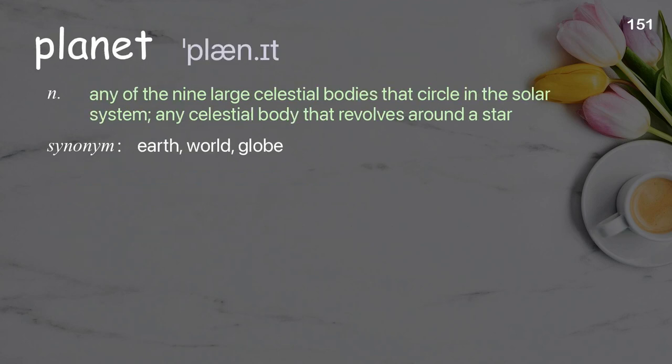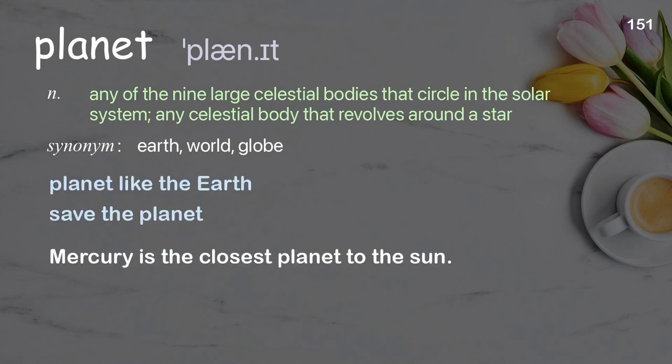Planet: Any of the nine large celestial bodies that circle in the solar system; any celestial body that revolves around a star. Examples: Planet like the Earth. Save the planet. Mercury is the closest planet to the sun.